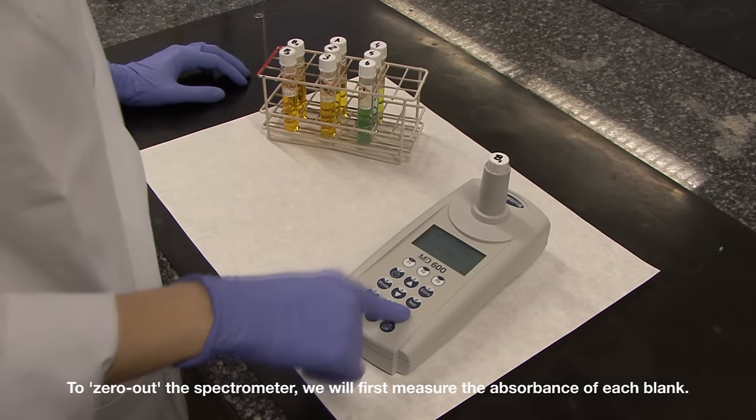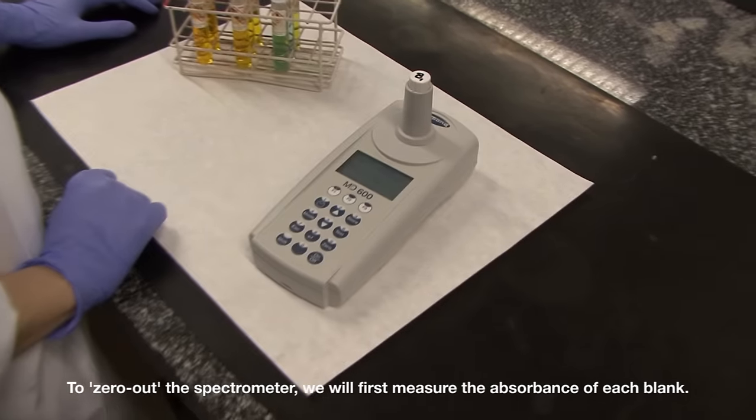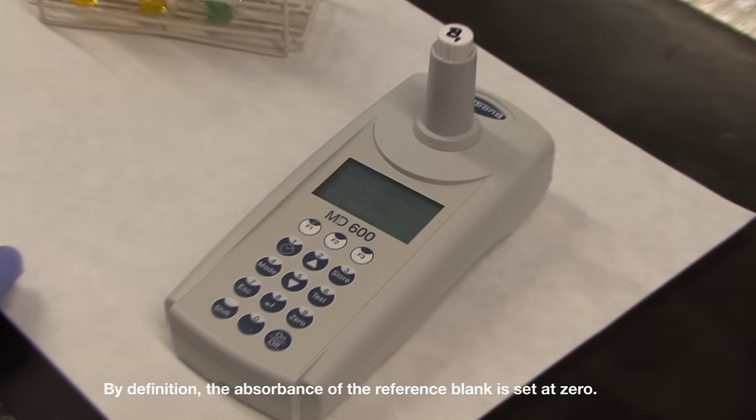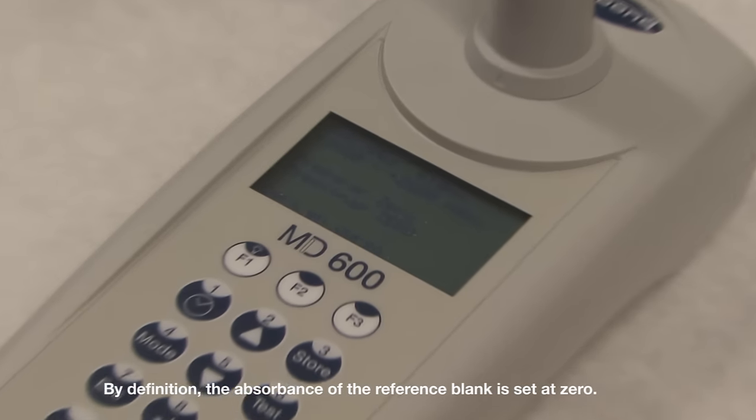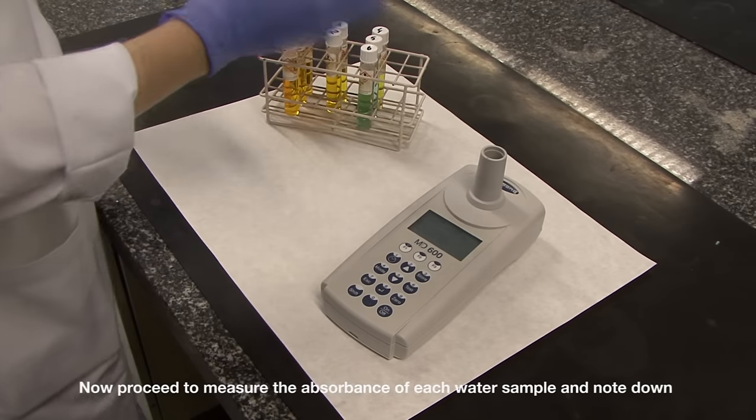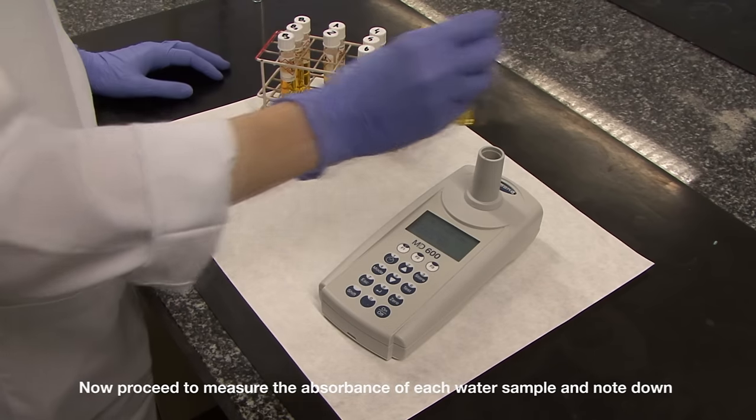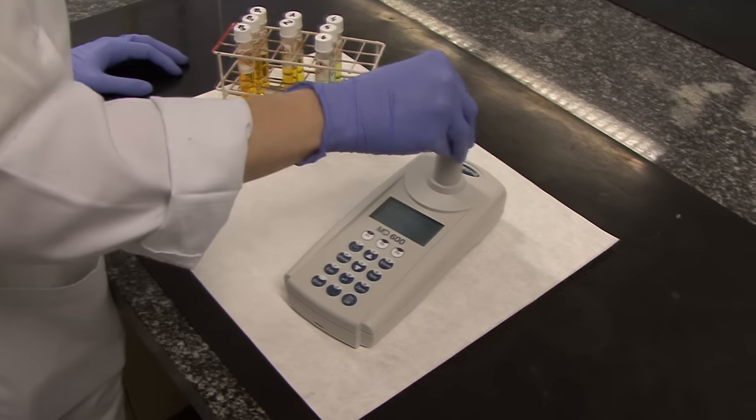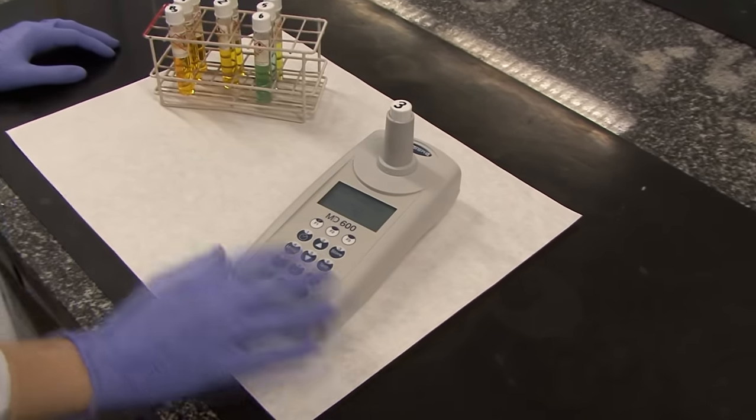To zero out the spectrophotometer, we will first measure the absorbance of each blank. By definition, the absorbance of the reference blank is set at zero. Now, proceed to measure the absorbance of each water sample and note down the absorbance value of each replicate.